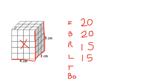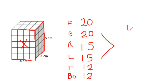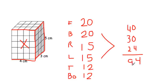All we have left is the top and the bottom. Looking at the top, we have a base of 4 and a width of 3, so 4 times 3 is 12. If the top is 12, then the bottom is going to be 12. Now we just add all of those sides up: 20 and 20 is 40, 15 and 15 is 30, 12 and 12 is 24. Adding those together gives us 94 centimeters squared. We label with squared because we are finding area.